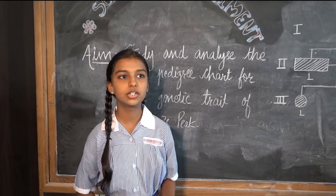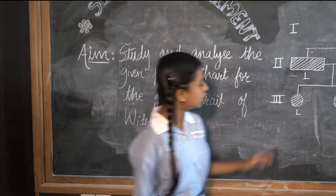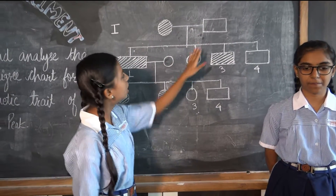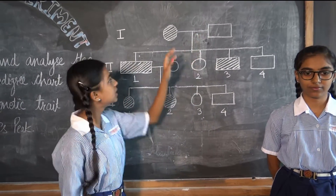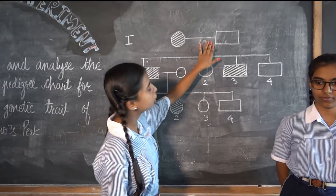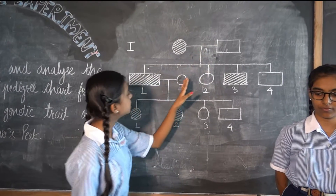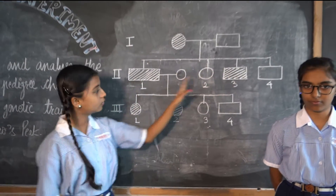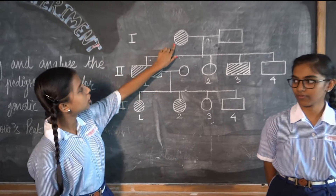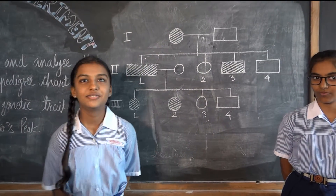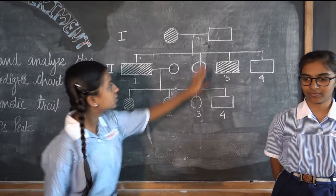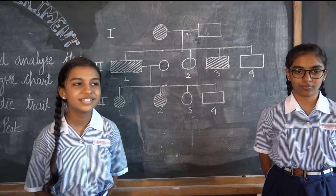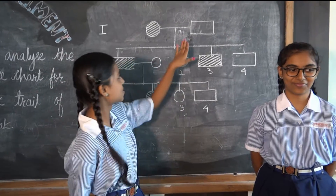Widow's peak is an autosomal dominant gene. In this chart, male members of the family are represented by squares and females by circles. Parents are joined by horizontal lines and their offspring are joined by vertical lines below, in order of birth. Solid figures show the widow's peak trait, whereas open figures show the straight hairline.